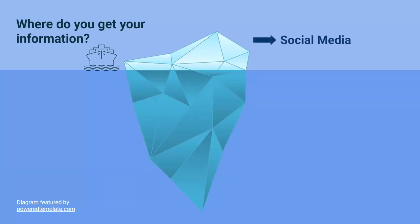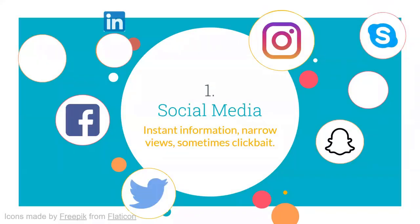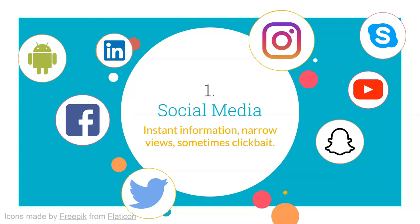If you are like most people today, you might first get your information from online sources like social media. This is a source of information that changes not just daily, but minute by minute. We see social media posts from individual people, organizations, schools, businesses, politicians, and more. It can often be narrow in view with usually little analysis. It can be instantaneous, and there's usually not a lot of vetting being done before this type of information is released. While it's a great way to keep in touch with what's happening in the world, you have to be careful about how you use and share this kind of information.